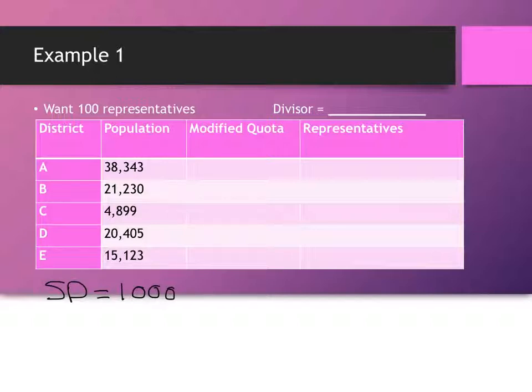All right, so let me just sort of tell you what I came up with. I came up with a divisor of 995.5. And this one is a little bit tough because you started out with a standard divisor. Here's my divisors and my representatives. I started out with 1,000 just to test that standard divisor out. You get 99 representatives. So you know you need to get lower.